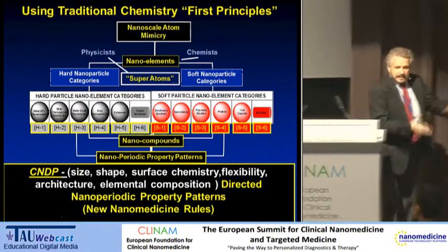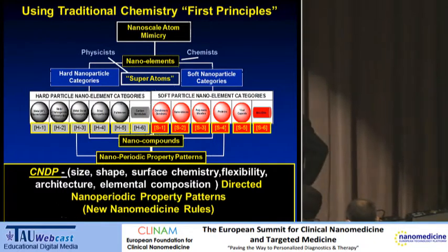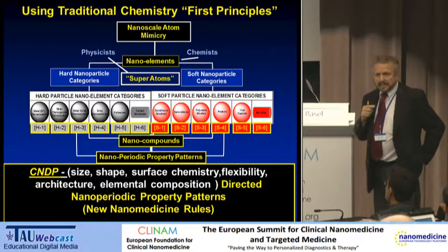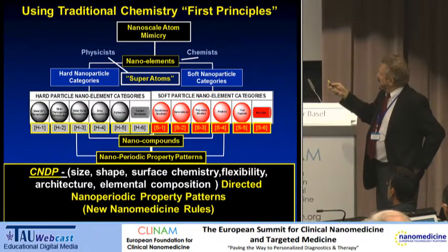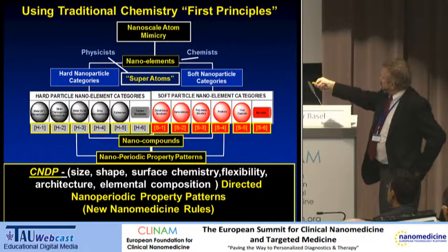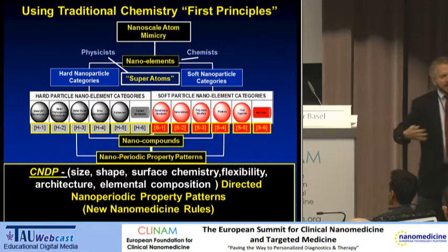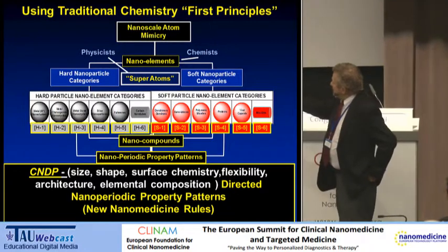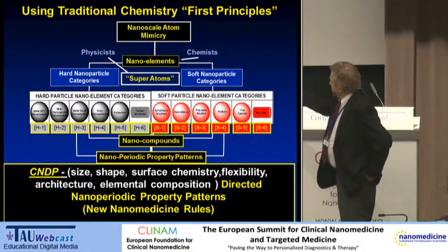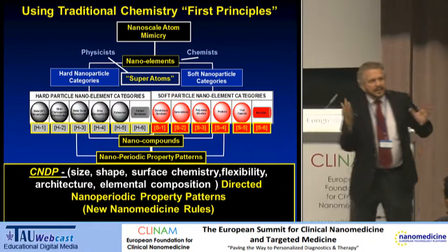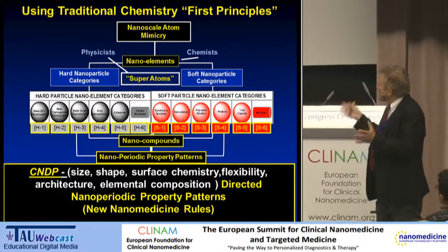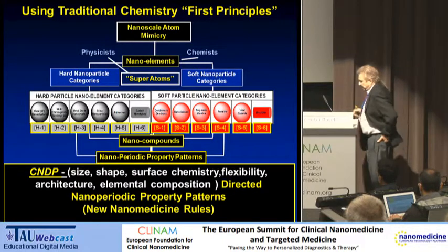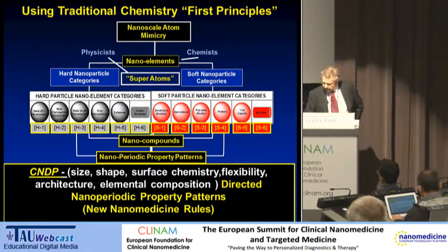Several years ago, in a paper coming out shortly from the Journal of Internal Medicine from the Karolinska Institute, we describe in language hopefully pleasant for physicians to understand how we use these critical nanoscale design parameters to make predictable nanoperiodic property patterns, and in the process develop many new nanotherapeutic and nanomedicine type rules.